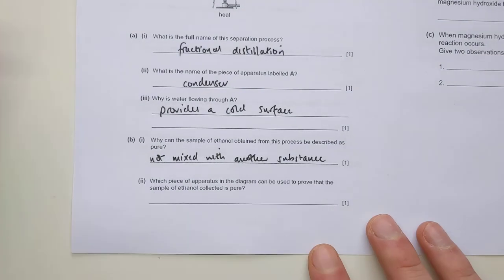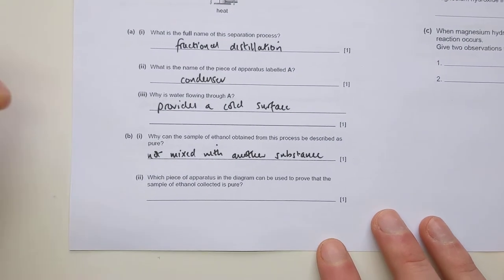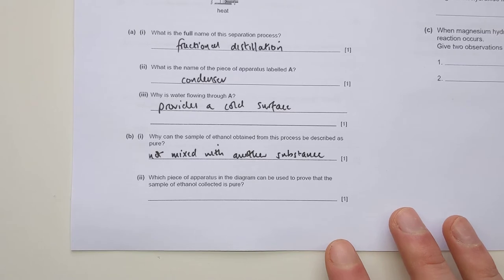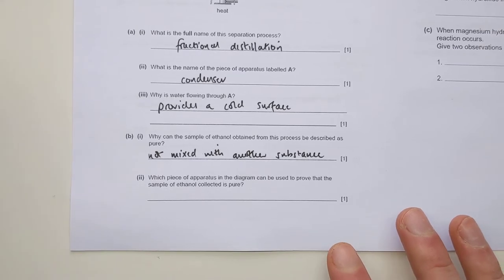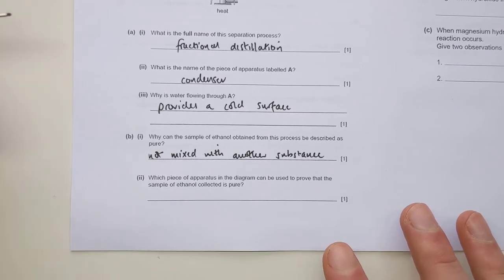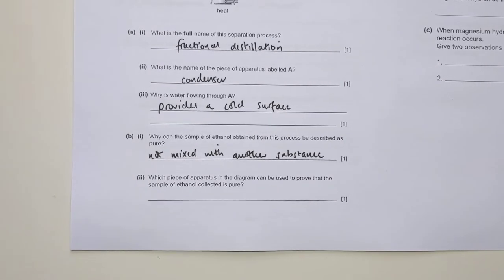However, if you took it to mean, well, how would we know that the ethanol is pure? That's a good interpretation of the question as well. You'd be looking for the idea that it's got a boiling point at a specific sharp temperature. Because that tells you something is pure if it's not got a boiling point or melting point over a range.